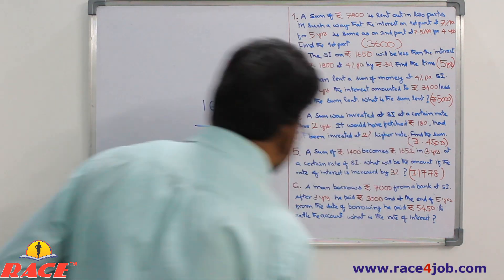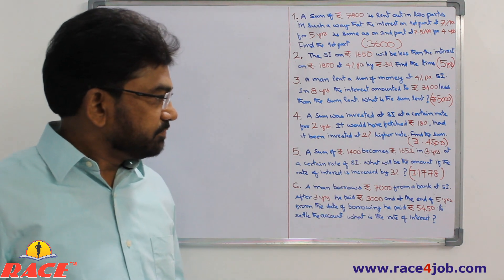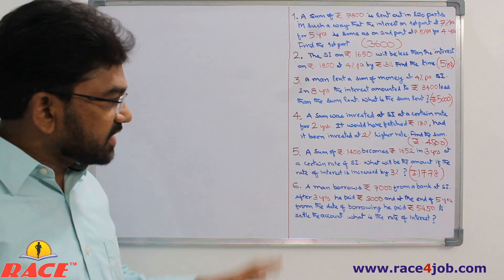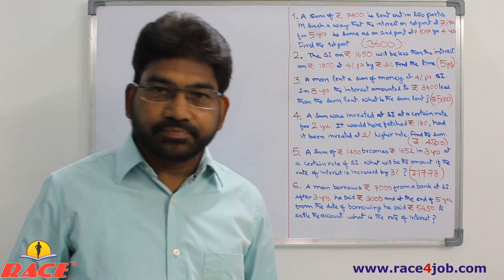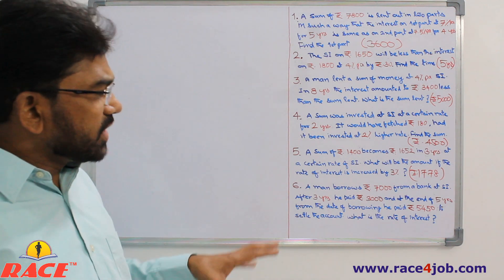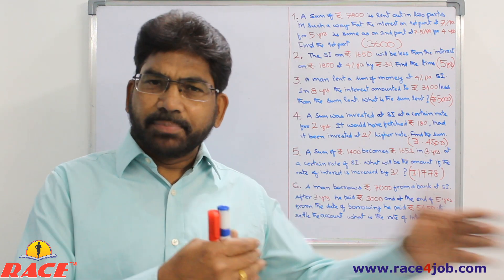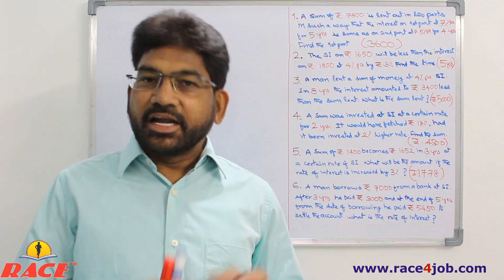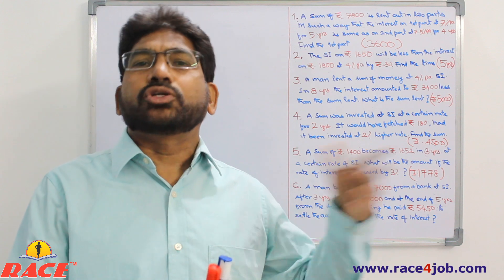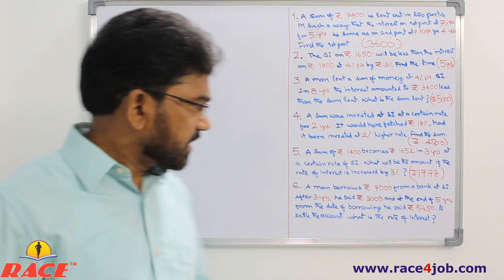Last question — an interesting one. A man borrows 7000 rupees from a bank at simple interest. After 3 years he paid 3000 rupees, and at the end of 5 years from the date of borrowing he paid 5450 to settle the account. What is the rate of interest? He paid 3000 after 3 years and 5450 after another 2 years. We need to find the rate.